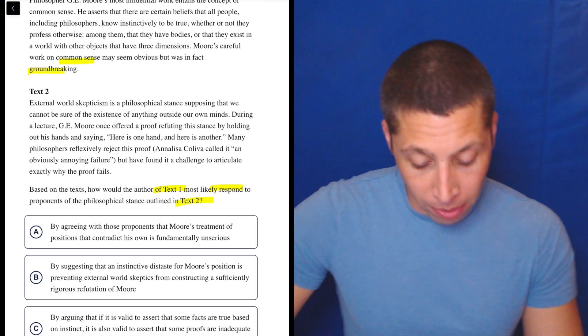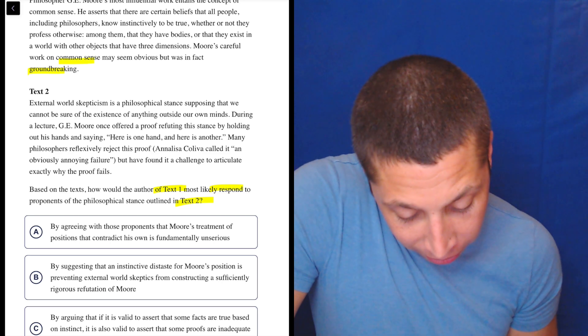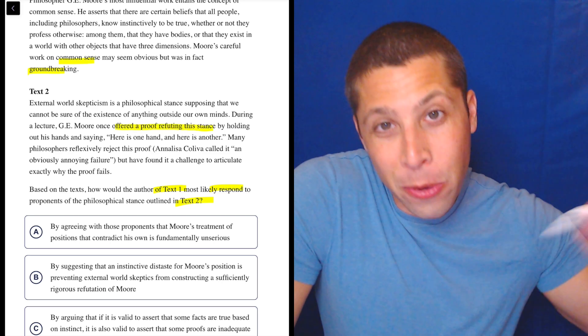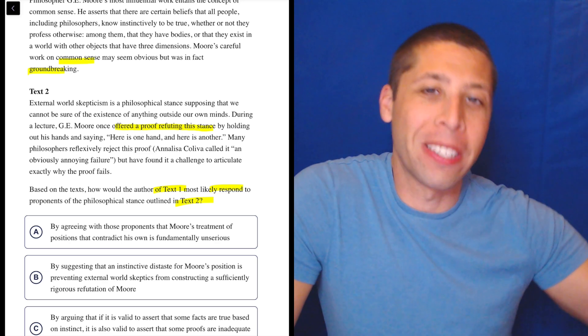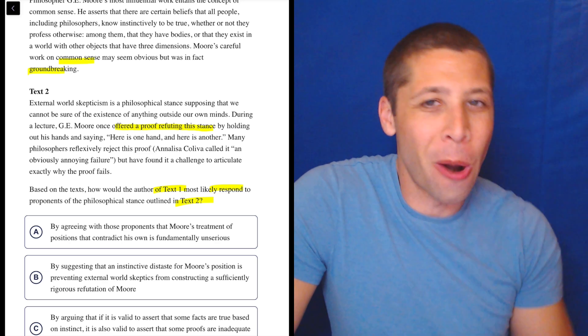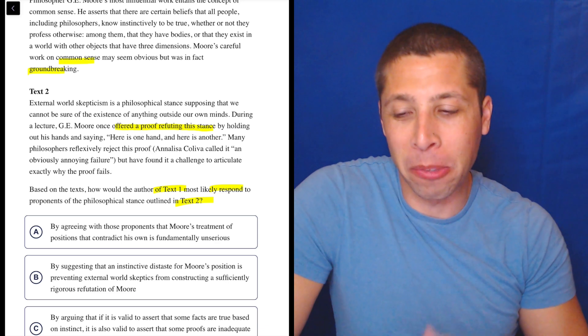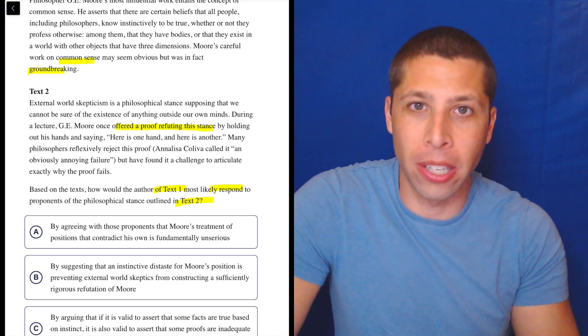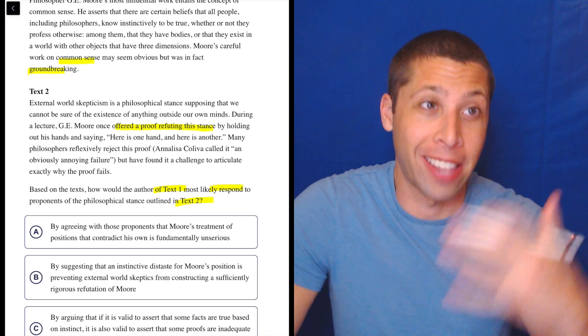So this is the part right here. He offered a proof refuting a stance. Well, we think of proof as proving something true and refuting as proving it wrong, but in philosophical terms, a proof is just kind of like an explanation.